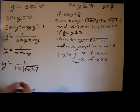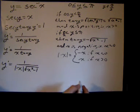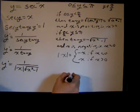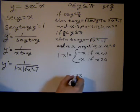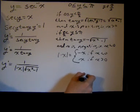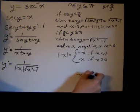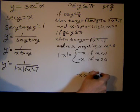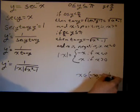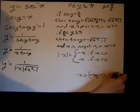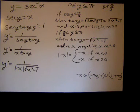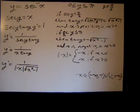Also, the domain of the arc secant function is x in (−∞, −1] ∪ [1, +∞). That's the domain of the arc secant function, and you should know that — sorry I didn't mention it earlier.